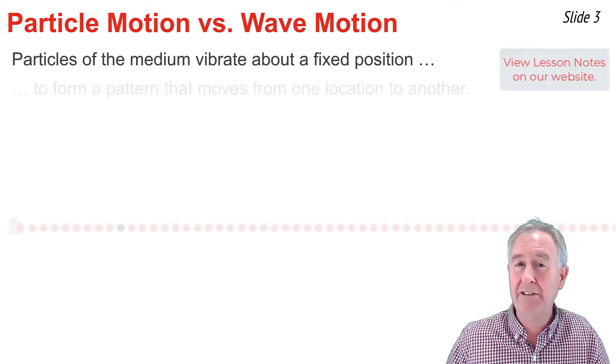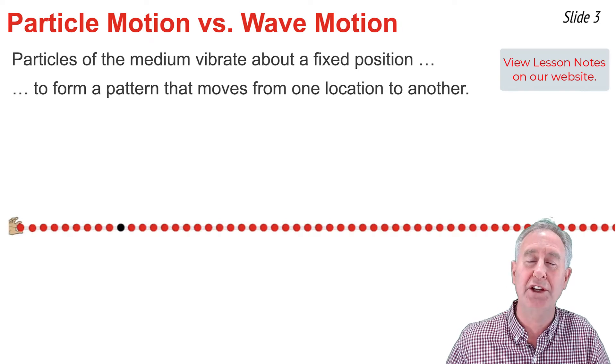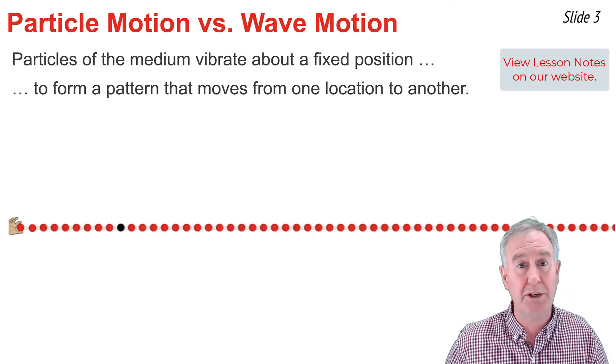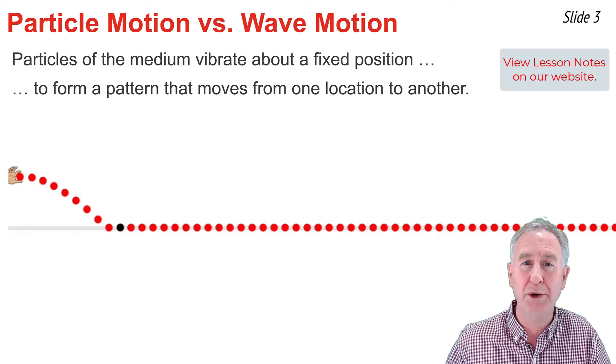The point is that when a wave moves through a medium, the particles of the medium vibrate about a fixed position. This results in the formation of some sort of wave pattern, and we observe that that wave pattern moves from one location to another.